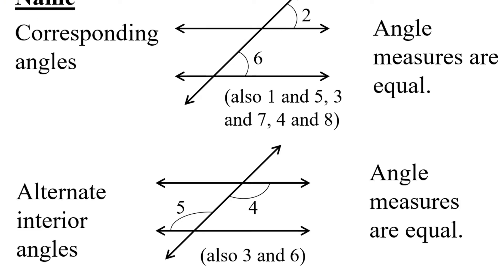Angles like 4 and 5 which are in between the parallel lines, or on the interior of the parallel lines, but on alternate sides of the transversal are called alternate interior angles. They're also equal.